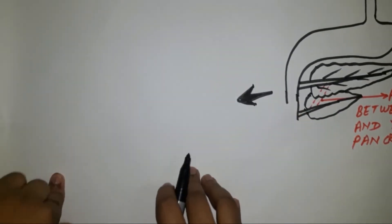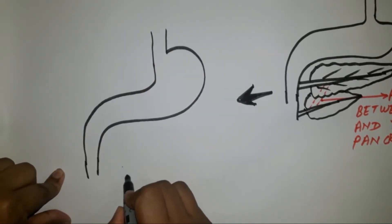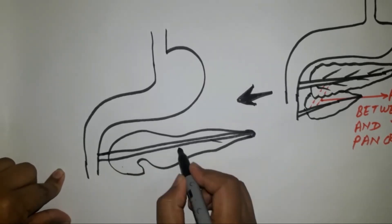Ventral pancreatic buds form the lower part of the head and uncinate process of pancreas.